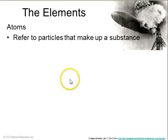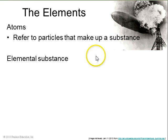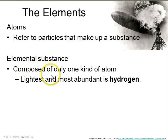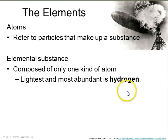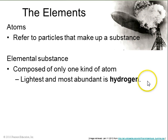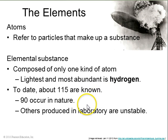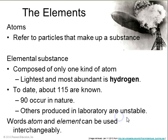Atoms refer to the particles that make up a substance, and an elemental substance is composed of only one kind of atom. The lightest and most abundant element in the universe is hydrogen — you can see the Hindenburg here, which is filled with hydrogen and is very flammable. To date, there are about 115 elements total known, 90 of which occur in nature and others of which are produced in the laboratory. The words atom and element can be used interchangeably.